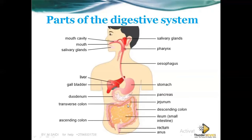The ileum is also a small intestine. So all of this coiled section is the small intestine, divided into three major parts: the duodenum, the jejunum, and the ileum. All of them are small intestines, where absorption and final digestion take place. Those are the major parts of the digestive system.